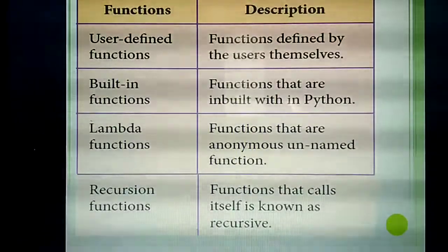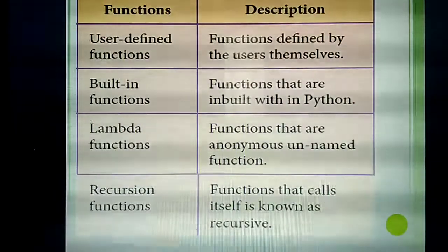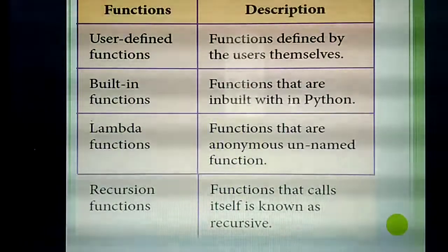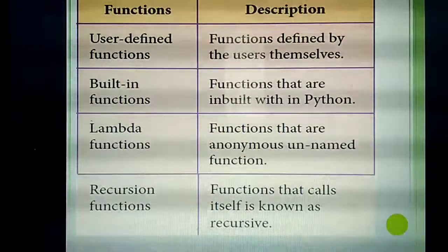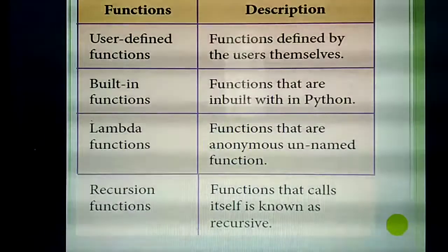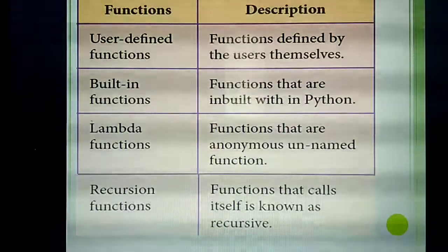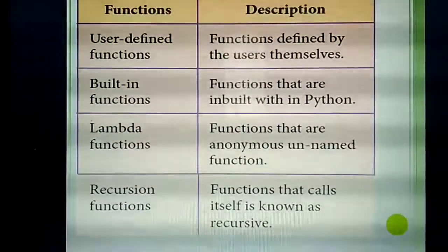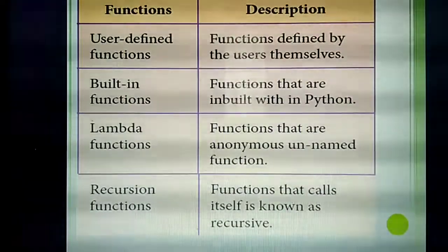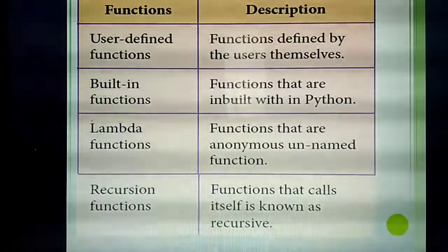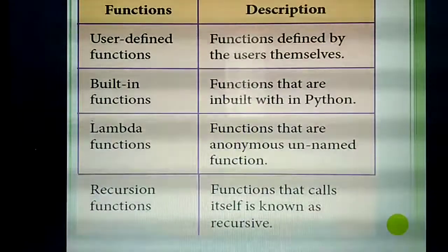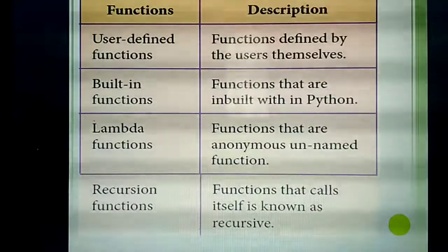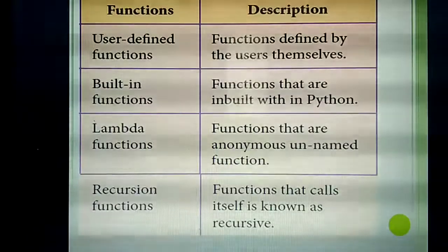The fourth type is recursion function. Recursion means the function calls itself again and again. For example, a program to check if a number is even or odd — the function itself calls repeatedly. That is called a recursion function.